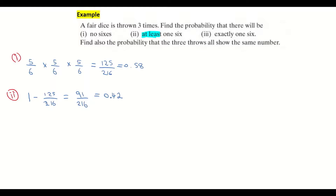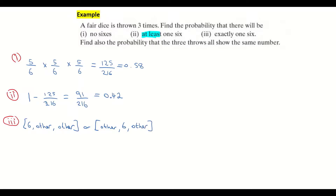Part three gets a little trickier — exactly one six, remembering we are throwing the dice three times. You could have many orders for this. I could get a six on the first throw, something other than a six on the second throw, and something other than a six on the third throw. Or I could get not a six on the first go, followed by a six on the second throw, and then a non-six on the third. Or I could get something other than a six, something other than a six, and then a six on the third throw.